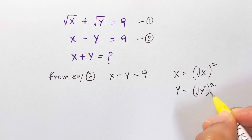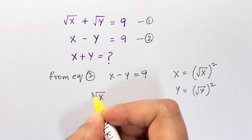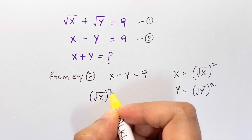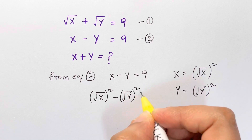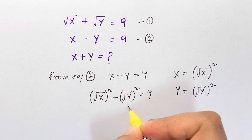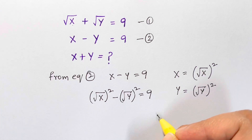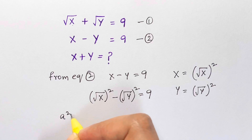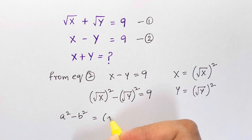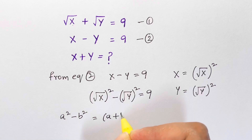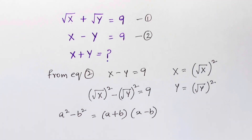Let me put it back in the equation. We have square root of x, the whole squared, minus square root of y, the whole squared, equals 9. This is in the form of the identity a squared minus b squared, where a is square root of x and b is square root of y, which equals a plus b times a minus b.